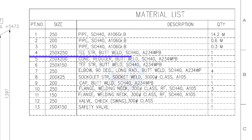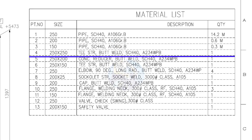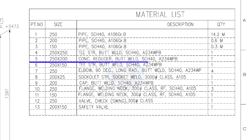Item number 4: 250 into 250 straight T, butt welded, schedule 40. Quantity is 1. Item number 5: 250 into 200 concentric reducer, butt welded, schedule 40. Quantity is 1.